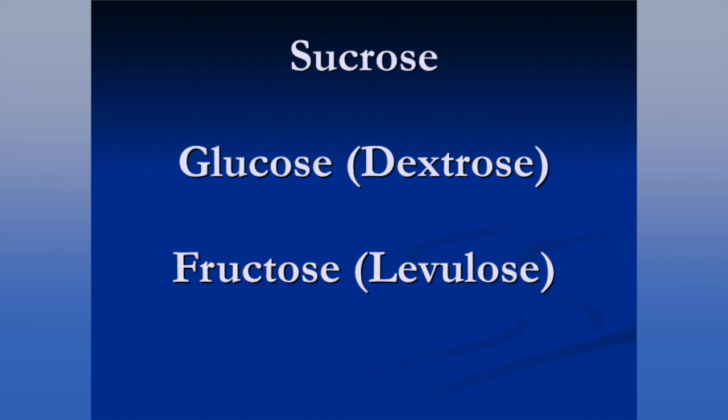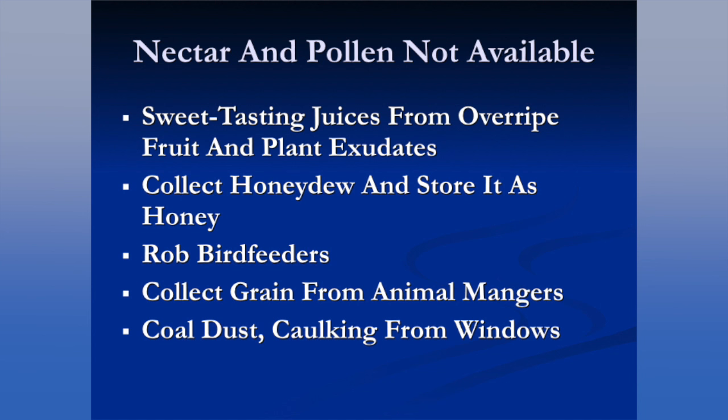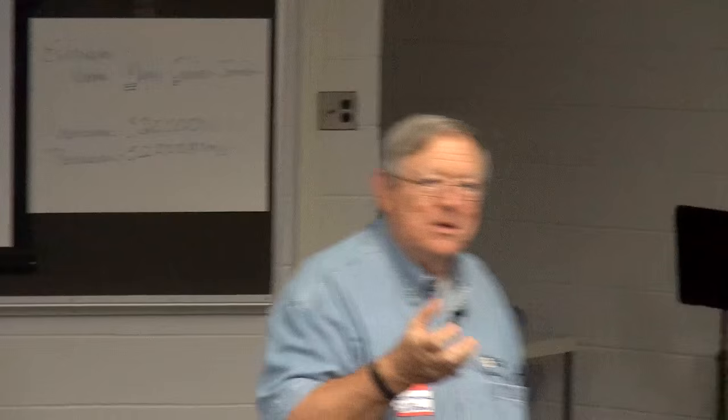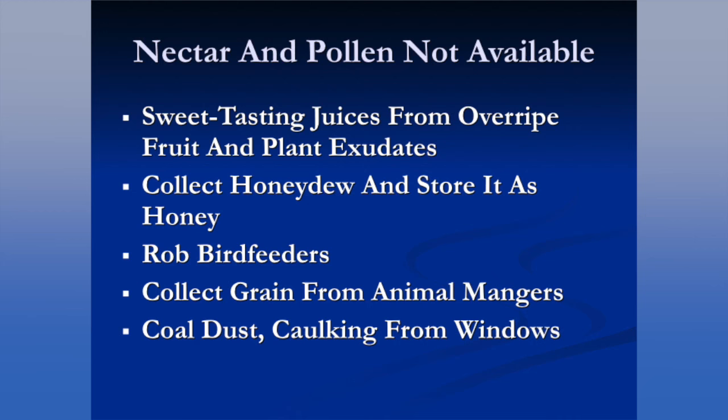Sugars — sucrose, glucose, and fructose — are an important part of the bees' diet. When nectar and pollen are not available, when weather permits, bees will go out and collect other things that are probably not nutritionally of any value to them, but they just have that hoarding, foraging instinct. For example, they love to rob my bird feeder — bird seed is of no value to them, but they will work it all day long.